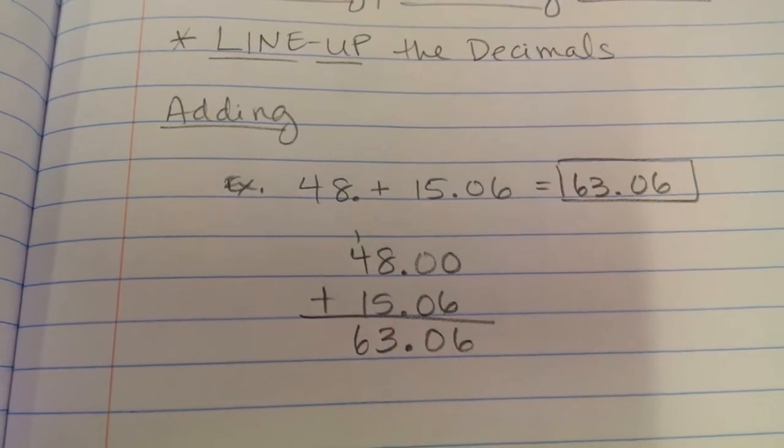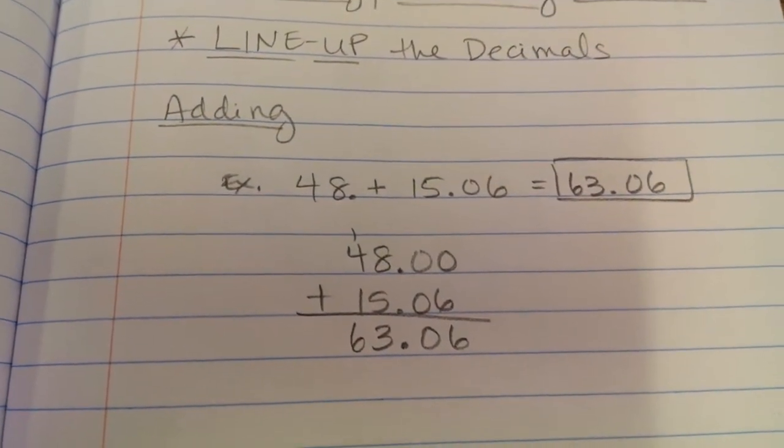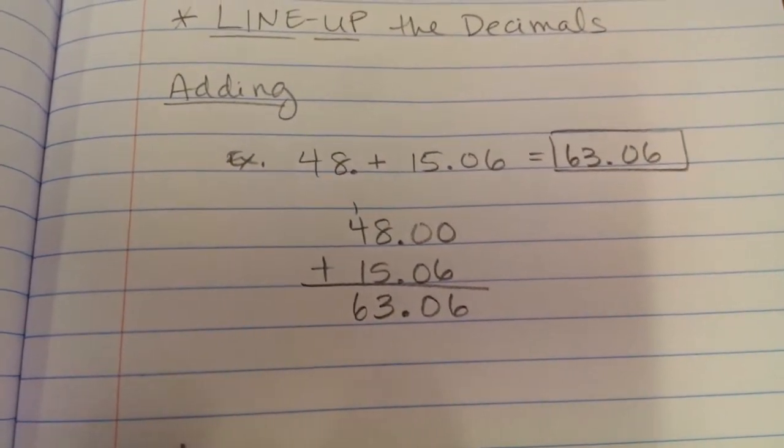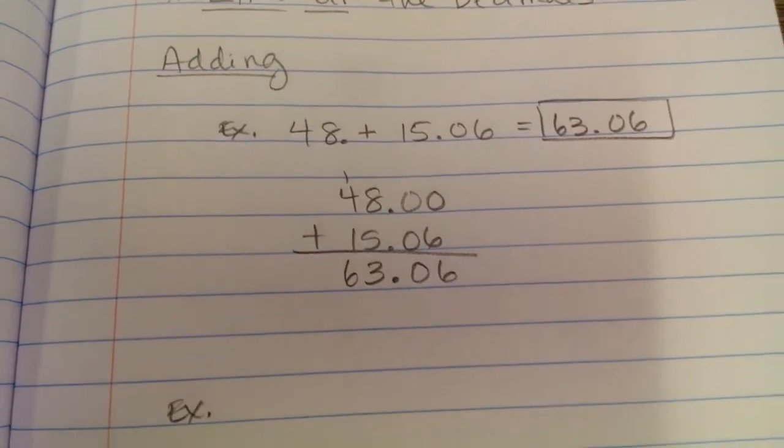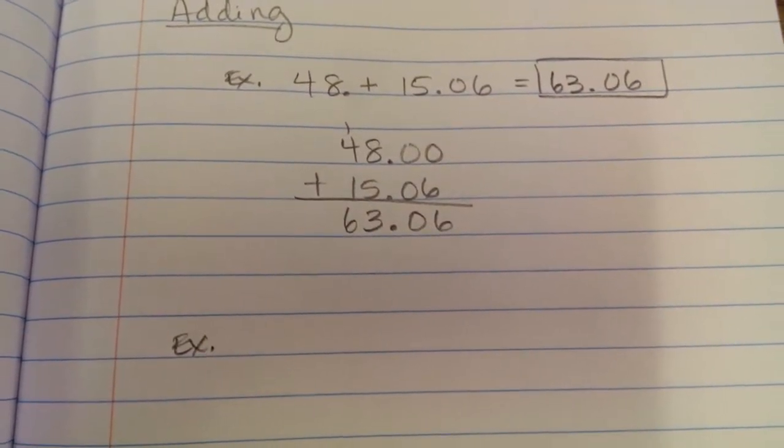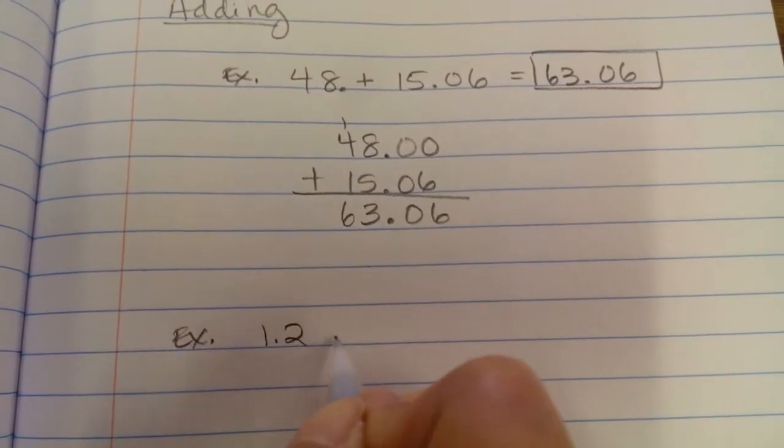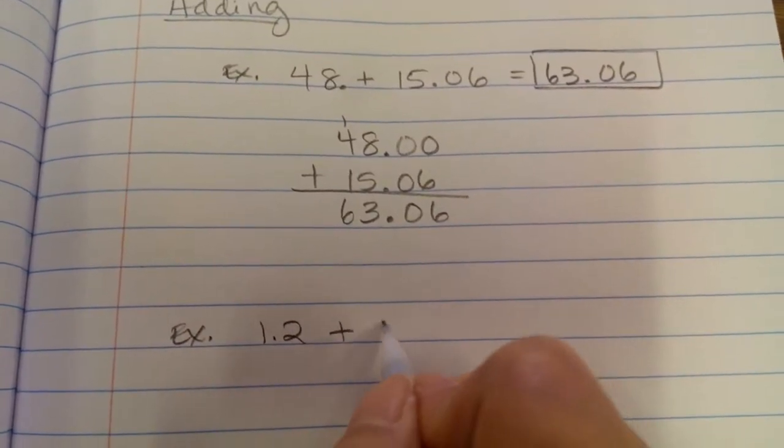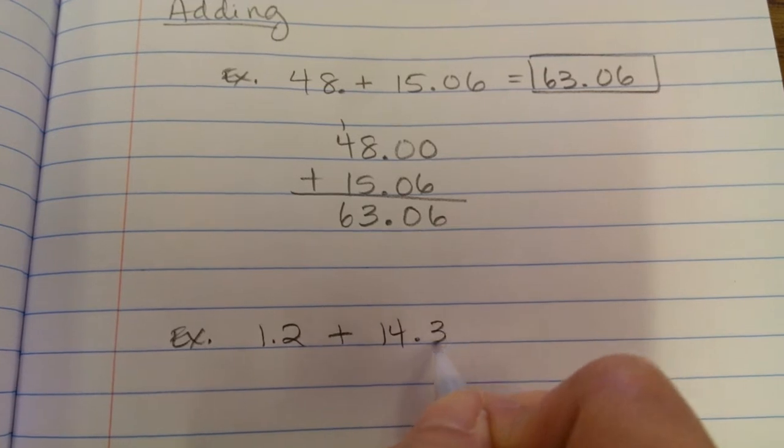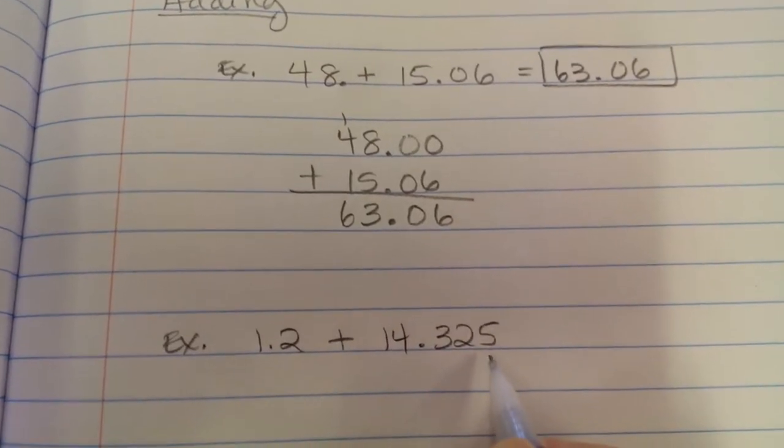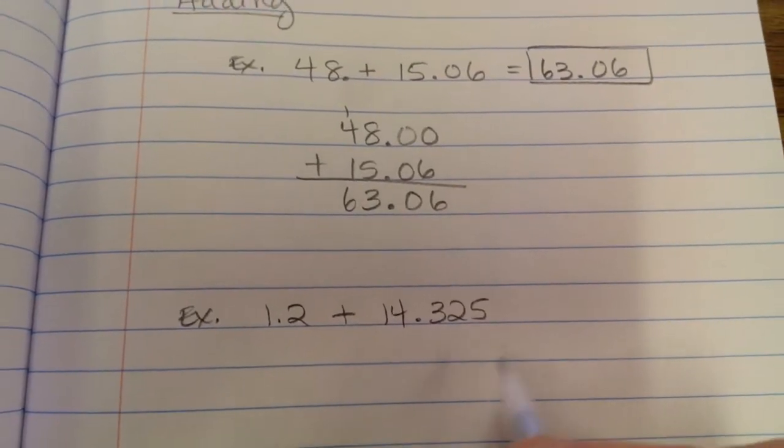So our answer for 48 plus 15 and 6 hundredths equals 63 and 6 hundredths. So that's our first example. Let's do one more. In our next example, we are going to add 1 and 2 tenths plus 14 and 325 thousandths.